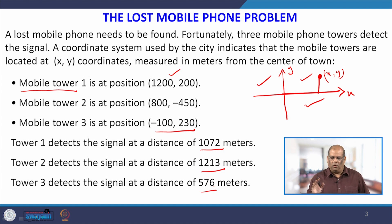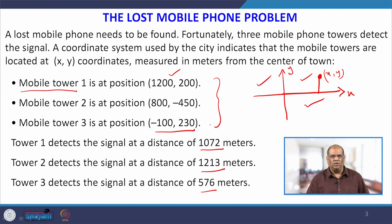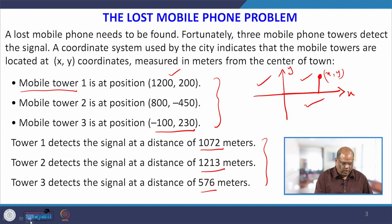The problem is that you have lost your mobile phone; the objective is to find an approximate location of that phone. The information available is the position of the mobile towers and the distance of the mobile phone from each tower. With that, we proceed.